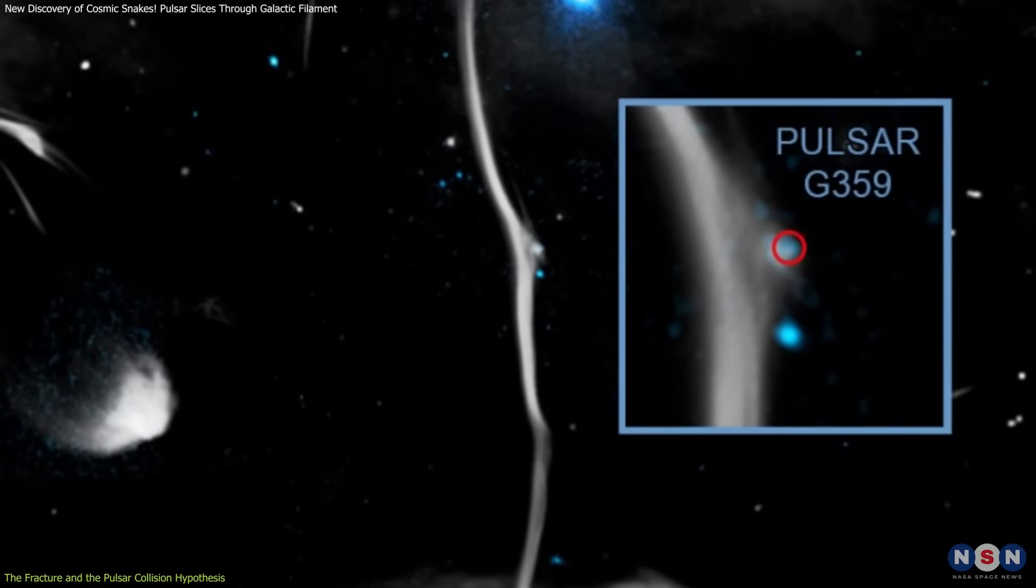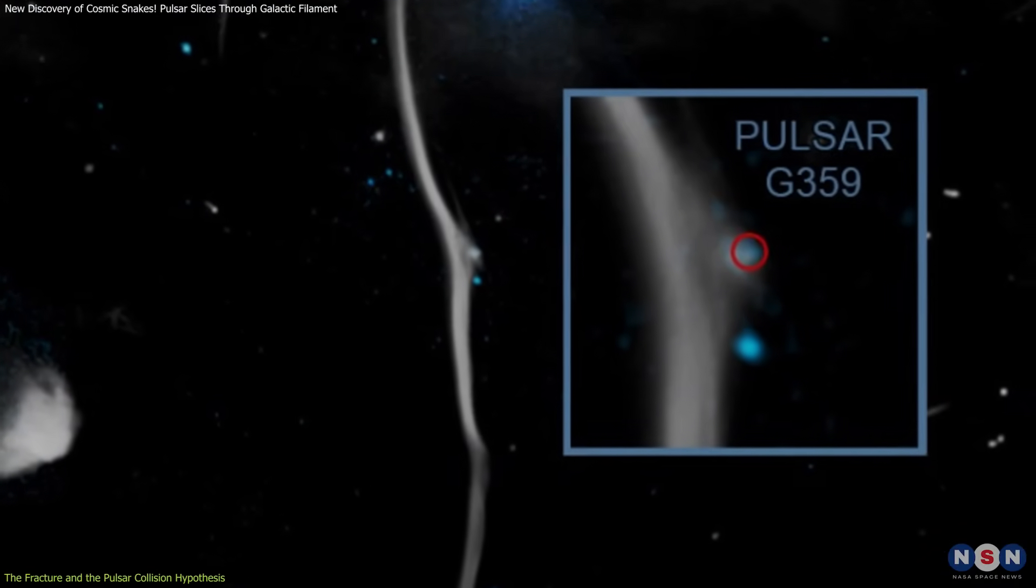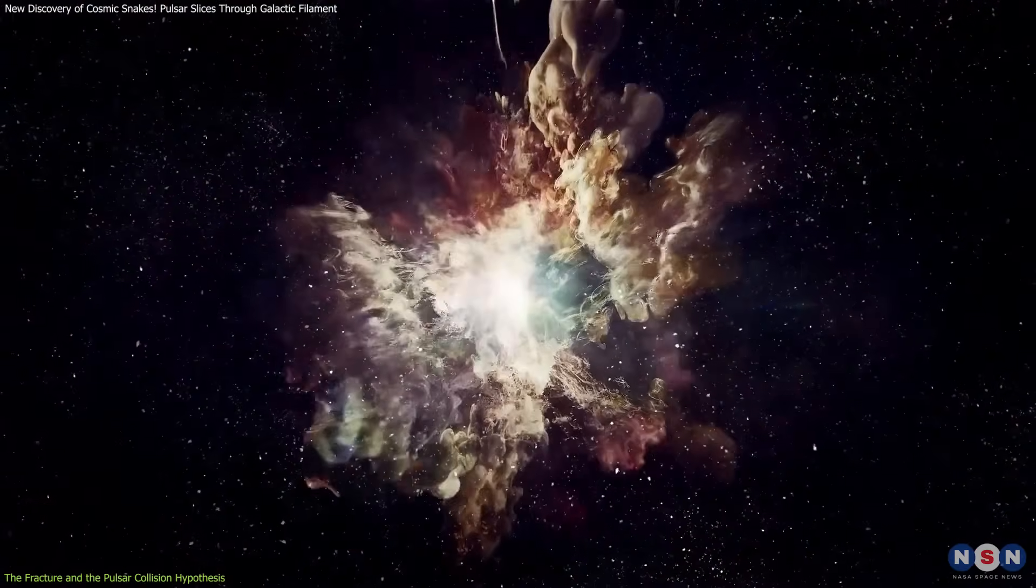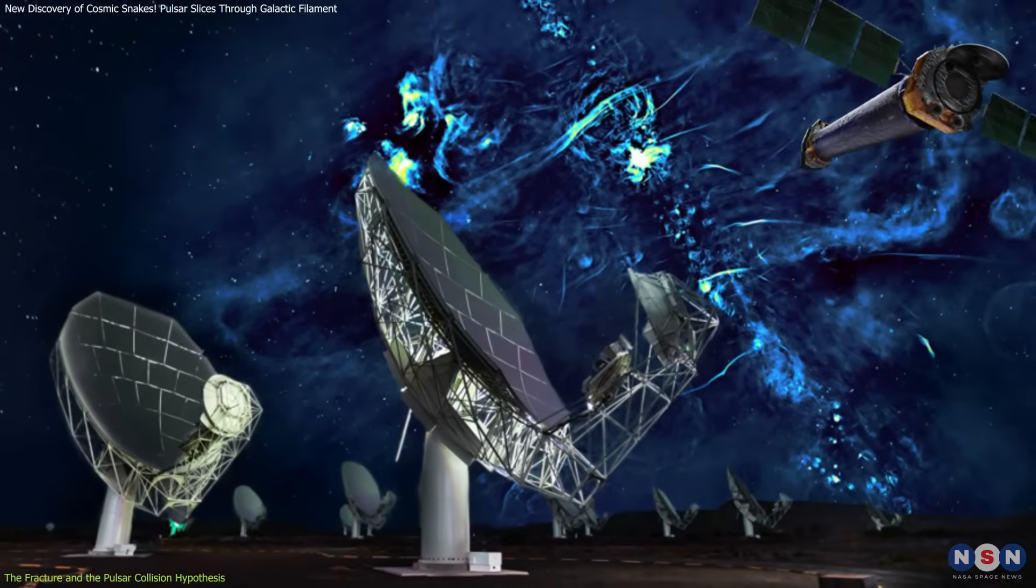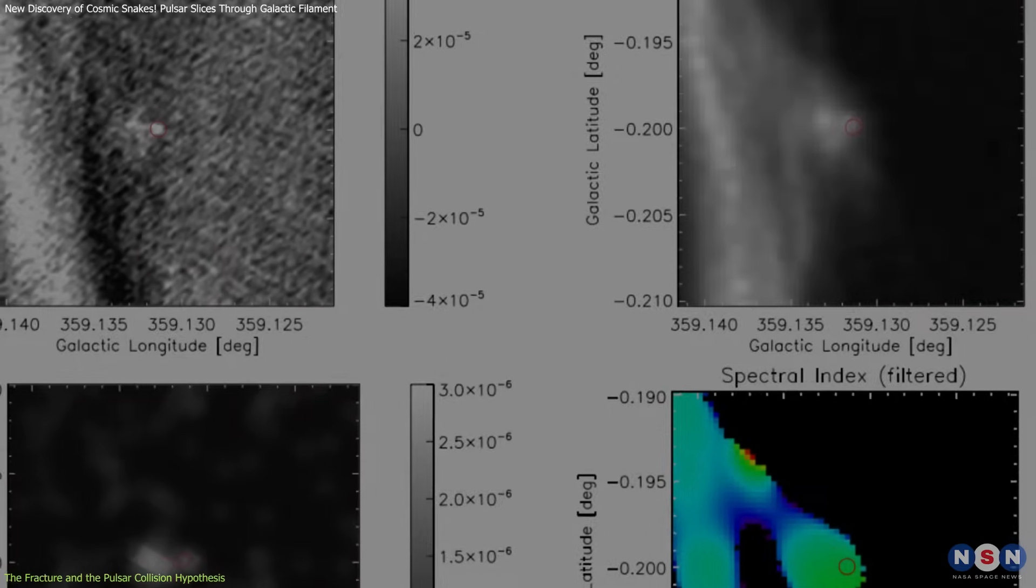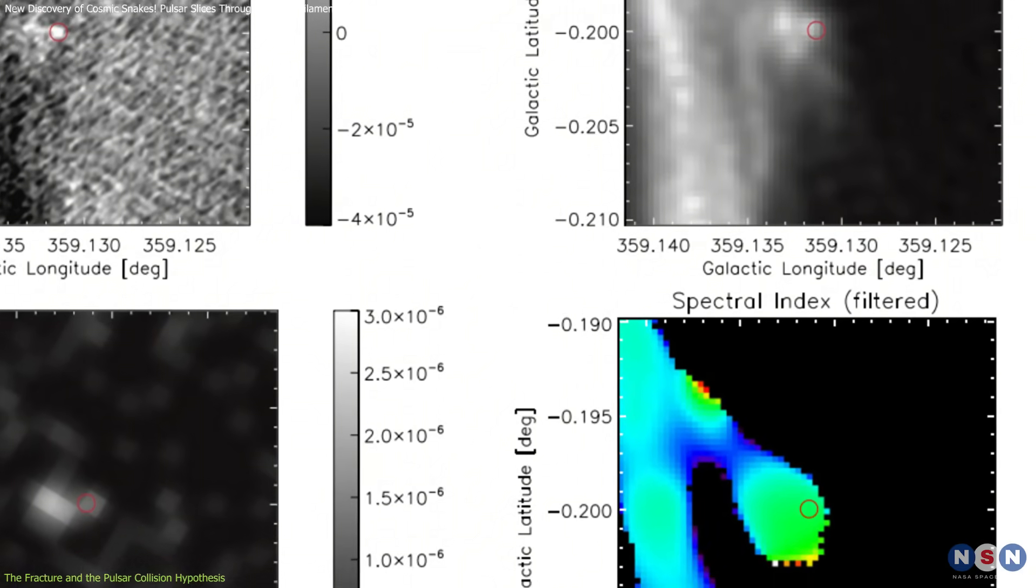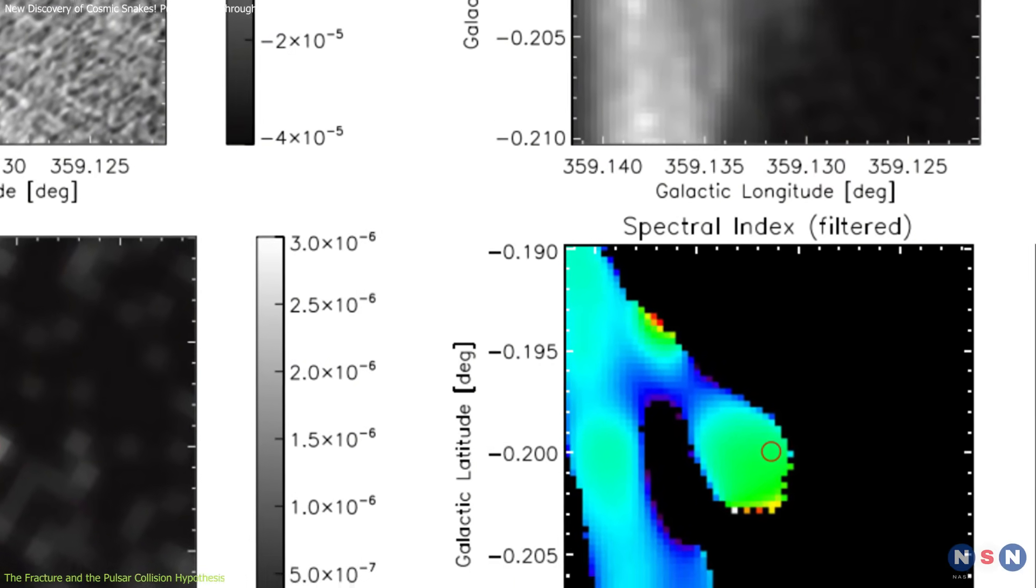At the core of the Cosmic Snake's fracture is a pulsar—a rapidly rotating, magnetized neutron star, born from the explosive death of a massive star.